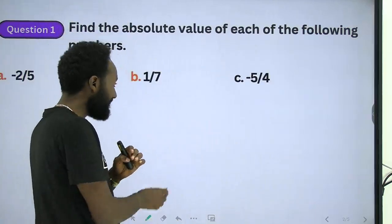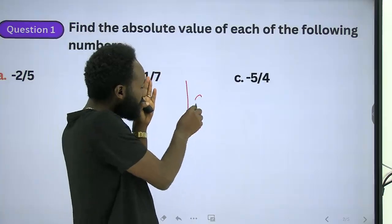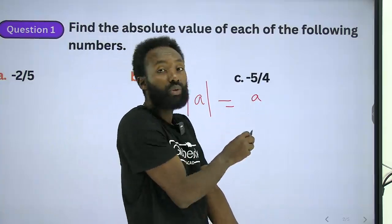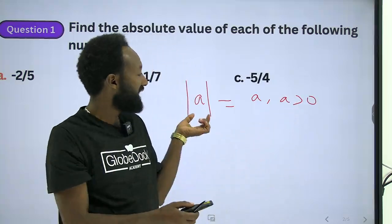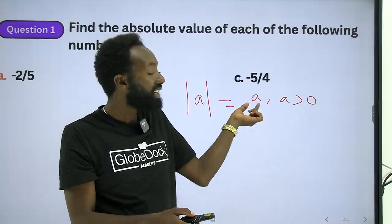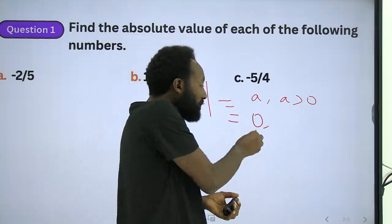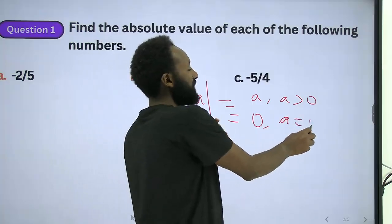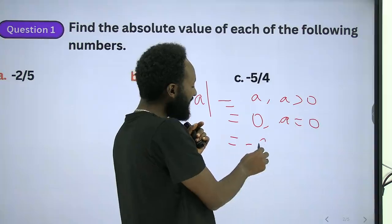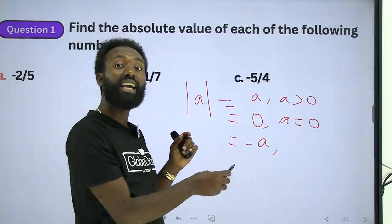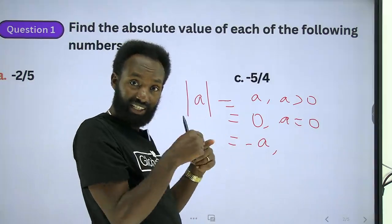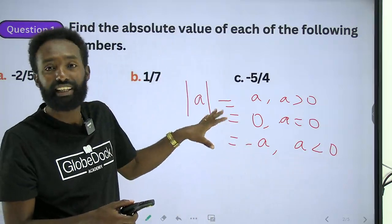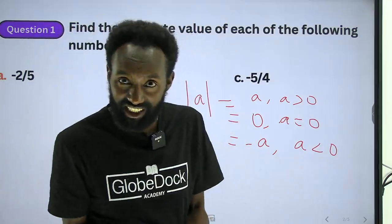If you have the concept of absolute value in real numbers, you will find the value of any number. The definition is: if a is greater than 0, the absolute value of a is a. If a equals 0, then the absolute value of a is 0. If a is less than 0, then absolute value of a equals minus a. Here is the absolute value definition that we can easily see.